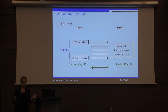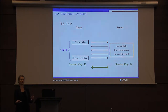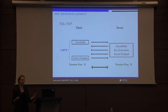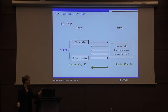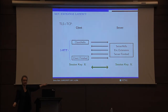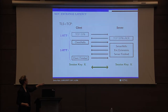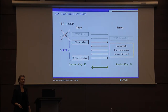TLS, for example — we're going to send a client hello with some other stuff, the server responds back with a finished message, and now the client can compute their own finished message and can actually start encrypting data. We compute the session key and send encrypted data. That's one full round trip, but if we add in TCP, we have two round trips, and it kind of begins to add up. Even if we do TLS over UDP, it still takes a while.